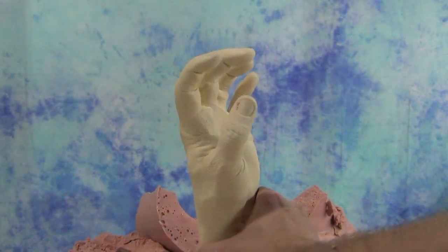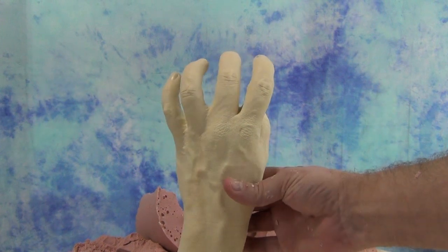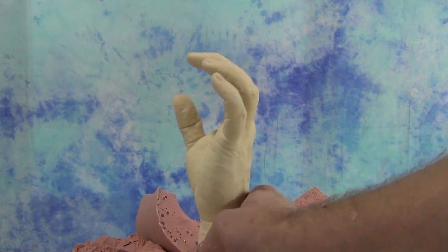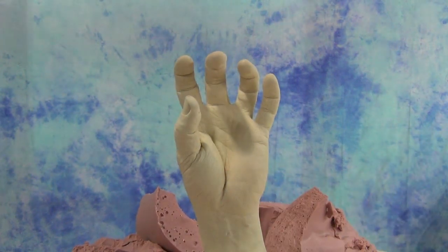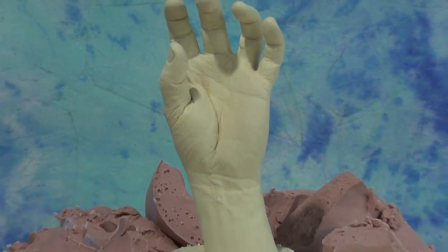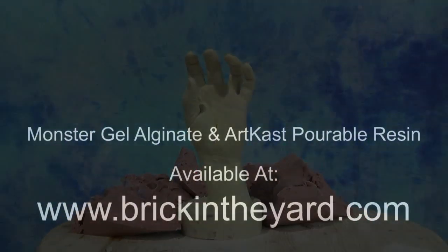So there you have the process of casting a resin positive from an alginate mold. Here we have a really nice bubble-free cast. We've got a little bit of residue to pick out, but other than that we are ready to paint it. A little bit of sanding on that base and we'll have a really nice positive. The process of casting an ArtCast pourable resin positive into a Monster Gel alginate mold.